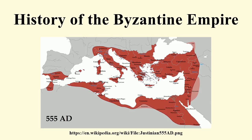J.B. Berry asserts that the foundation of Constantinople inaugurated a permanent division between the eastern and western, the Greek and the Latin halves of the empire, a division to which events had already pointed, and affected decisively the whole subsequent history of Europe.